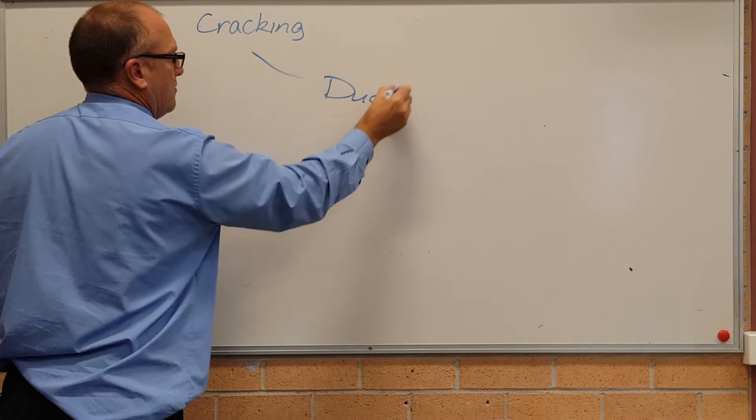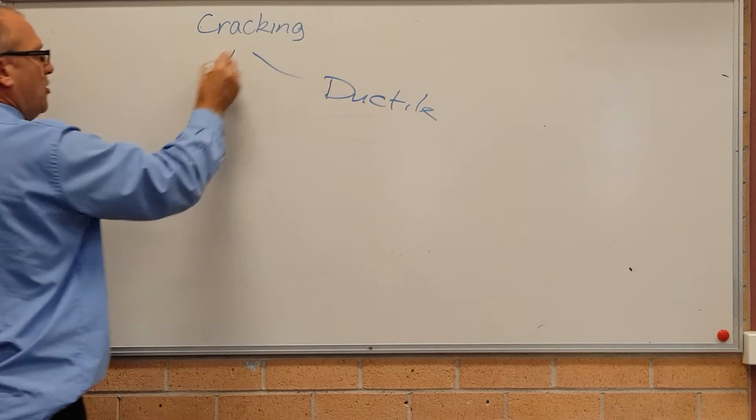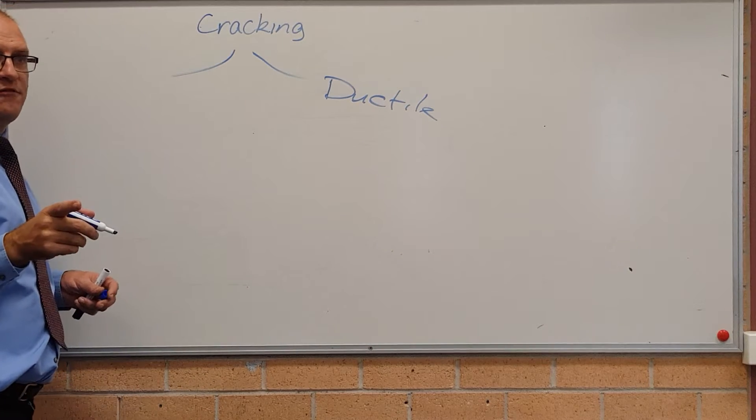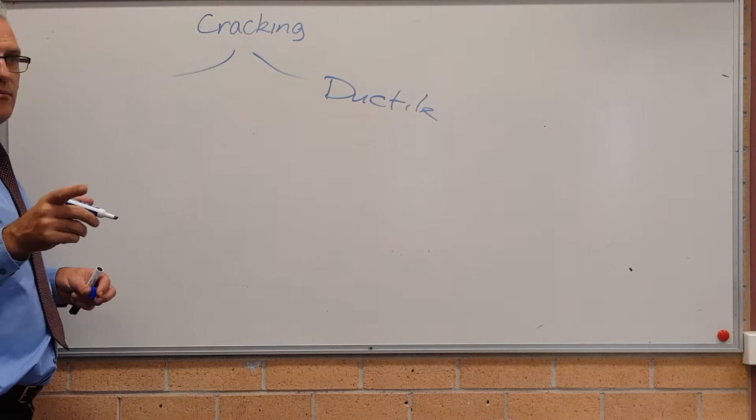Two forms: ductile and the other form, non-ductile. The other word for non-ductile begins with B. Brittle.